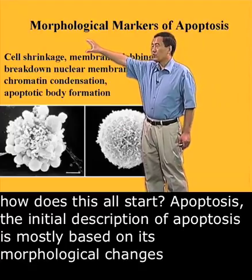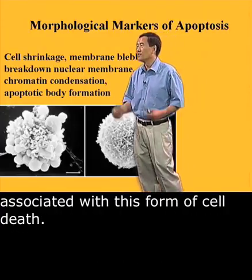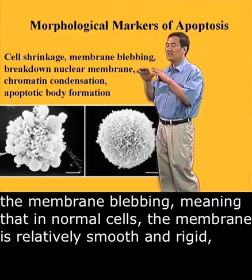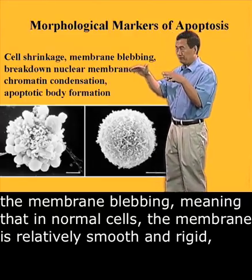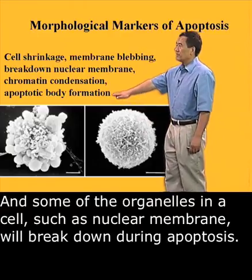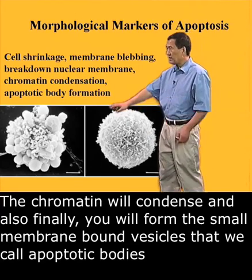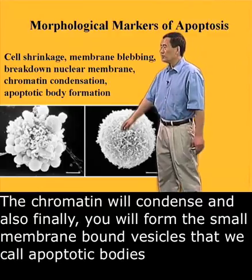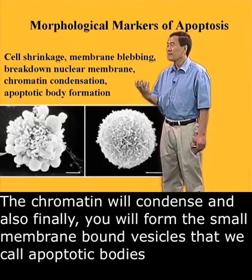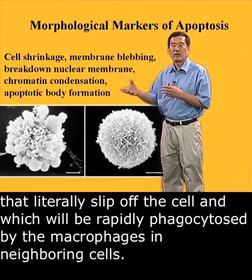The initial description of apoptosis is mostly based on its morphological changes associated with this form of cell death. These morphological changes include cell shrinkage; membrane blebbing — meaning that in normal cells the membrane is relatively smooth and rigid, but during apoptosis the membrane starts waving. Some organelles, such as the nuclear membrane, will break down during apoptosis. The chromatin will condense, and finally you will form small membrane-bound vesicles called apoptotic bodies, which literally slip off the cell and are rapidly phagocytosed by macrophages and neighboring cells.